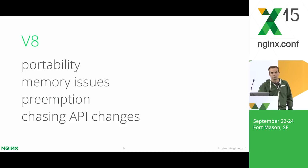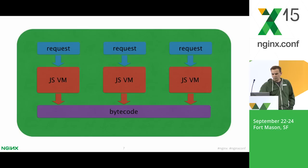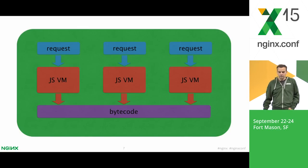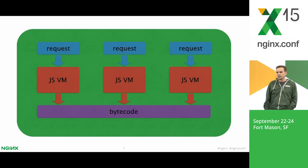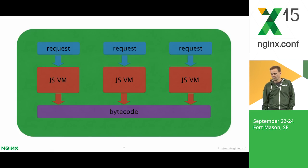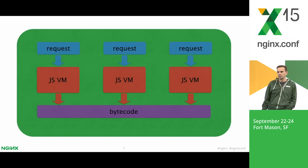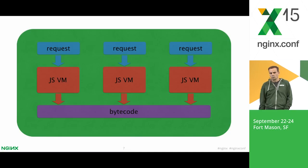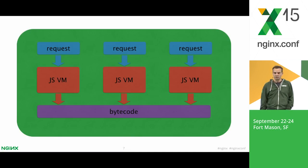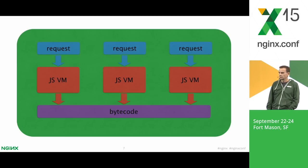So I decided to write my own JavaScript implementation. We run virtual machines per request. We do not share one JavaScript virtual machine as, for example, Node.js does. This approach allows us to preempt these machines without any issues. Also, in many cases, for short-lived requests, we do not need garbage collection at all. We can simply discard the virtual machine when the request is complete.